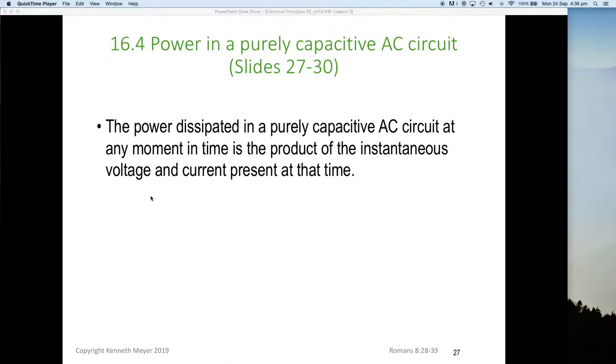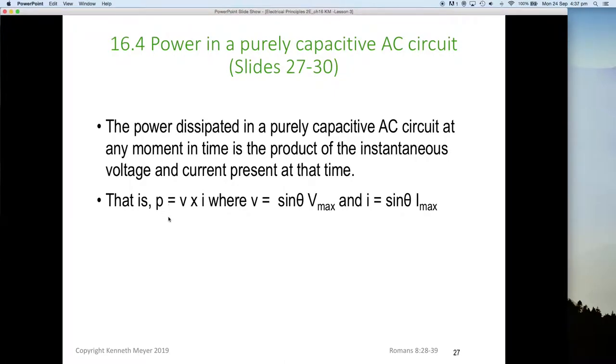The power dissipated in a purely capacitive AC circuit at any moment in time is the product of the instantaneous voltage and current present at that time. So power is equal to v times i. Notice we've used lowercase because we're dealing with instantaneous values. So v instantaneous equals v_max sine theta, and i instantaneous equals i_max sine theta.